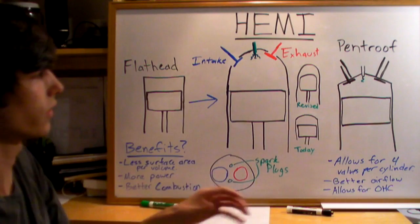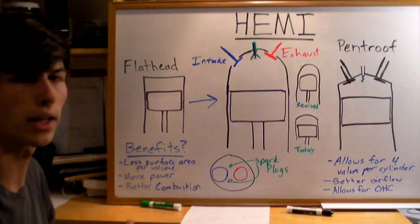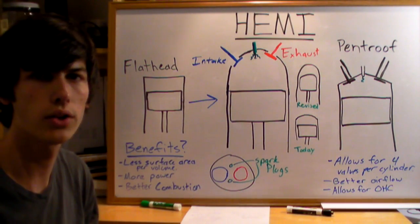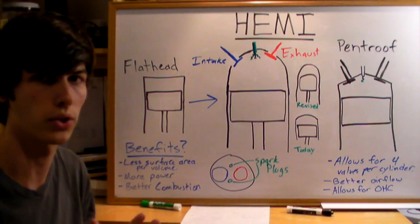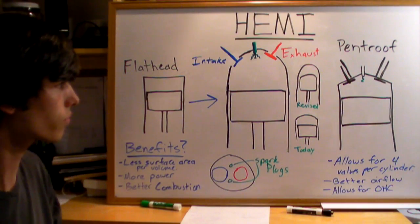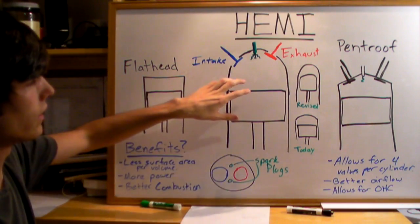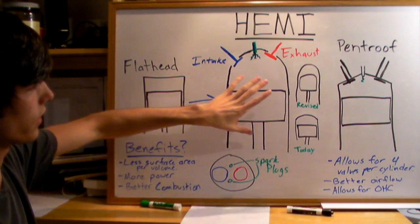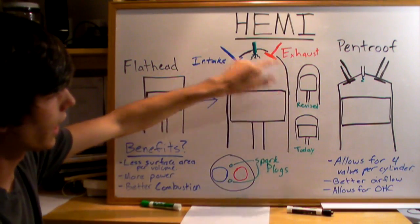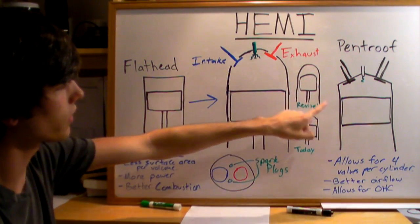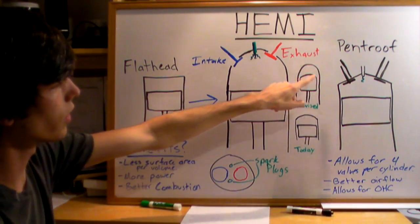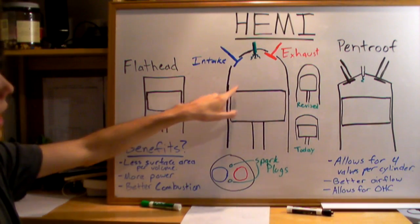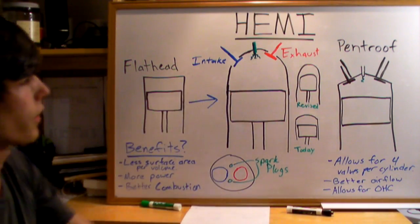One of the downsides was that it was difficult to get a high compression ratio, and a compression ratio is essential to having an efficient engine. So what they did, they revised this design and curved the piston so that the piston had a kind of hemispherical outline on top.